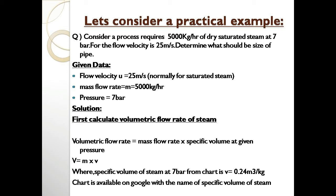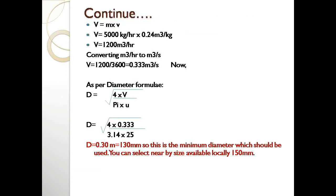So V equals m multiplied by specific volume (v). The specific volume of steam at 7 bar, taken from a steam table chart (easily available on Google), is 0.24 m³/kg — meaning each kg of steam occupies 0.24 m³. Therefore, volumetric flow rate = 5000 kg/hr × 0.24 m³/kg = 1200 m³/hr.